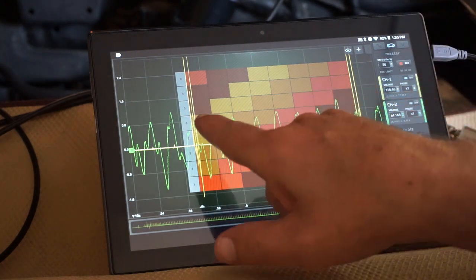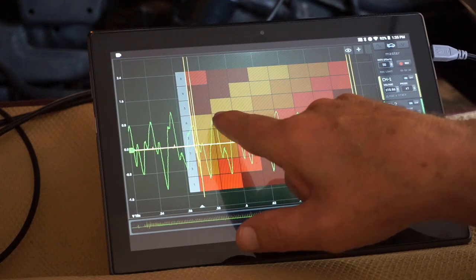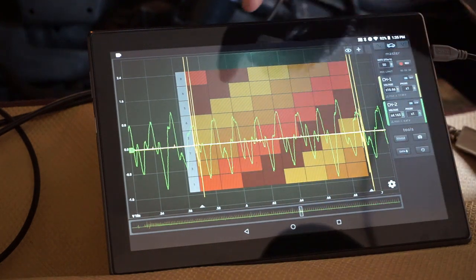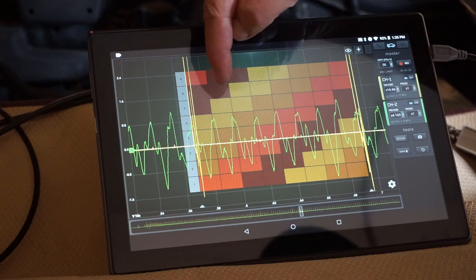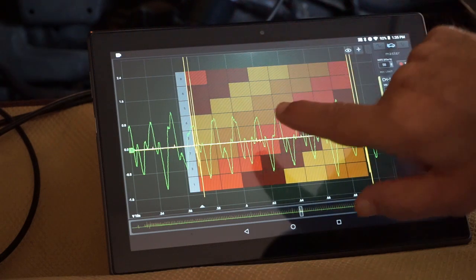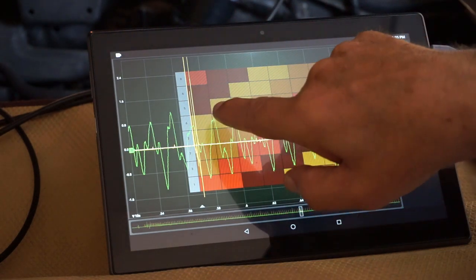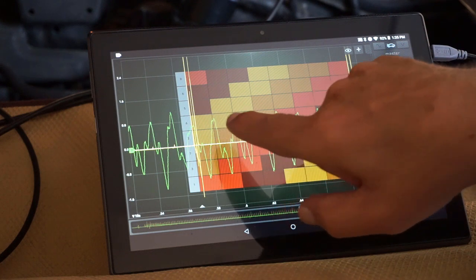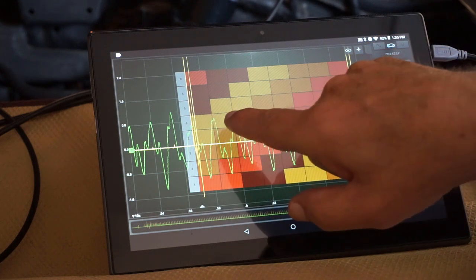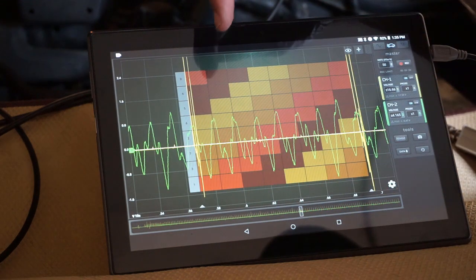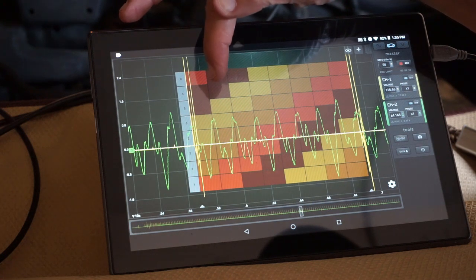Same thing would happen, let's say that there was an issue here with number six. Number four is the cylinder that's undergoing the exhaust stroke at that time. So if there was a problem with that peak here, it was either problems with the valves on number six or the intake valve stuck open on number four.